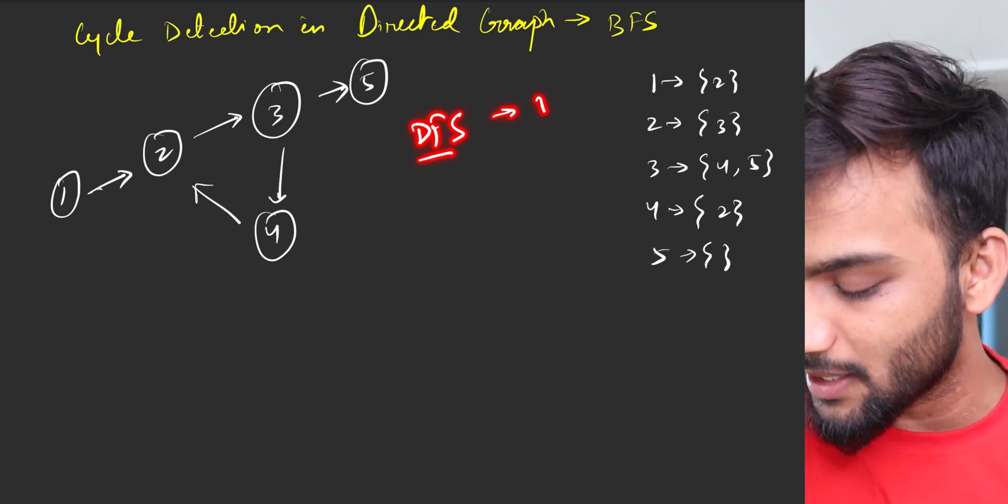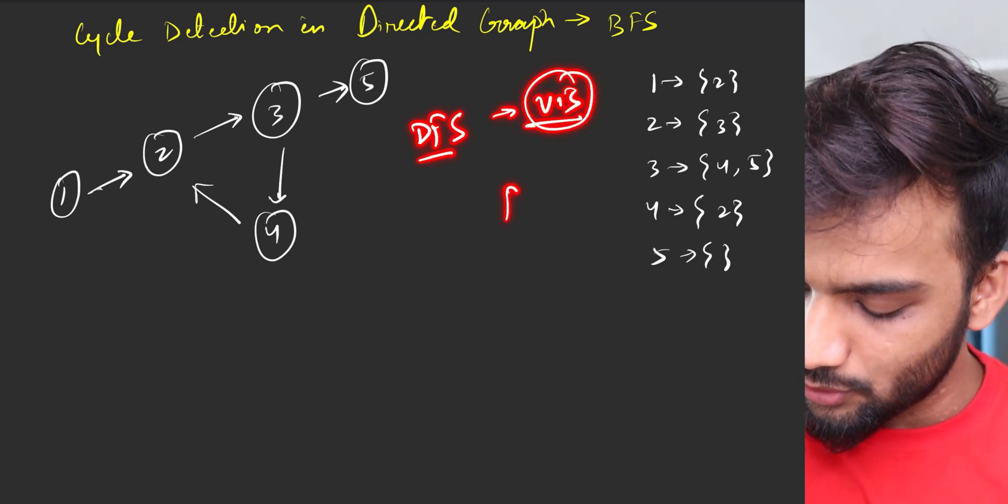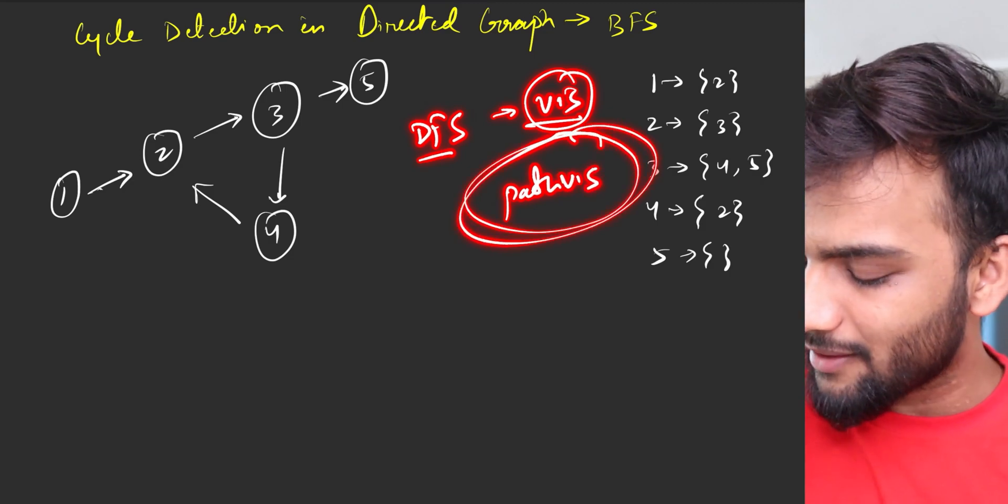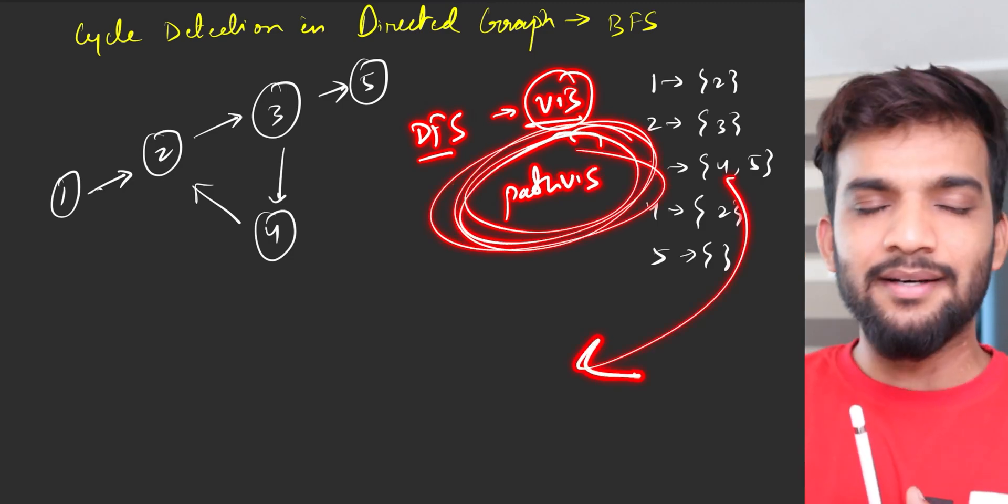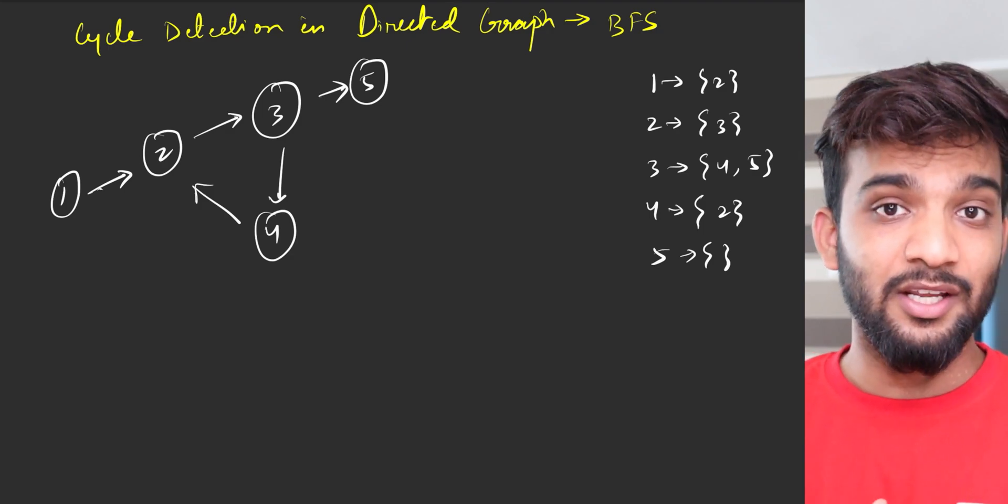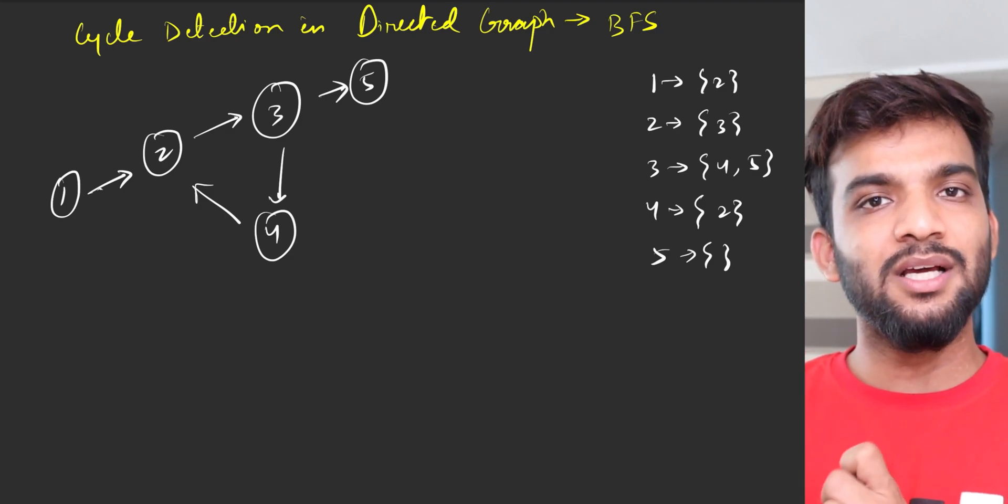So if you remember in the DFS we used something like a visited and then we use something like a path visited. Now in the backtracking we reset the path visit, but in BFS there cannot be a backtracking. So how do we implement a similar sort of algorithm into BFS?